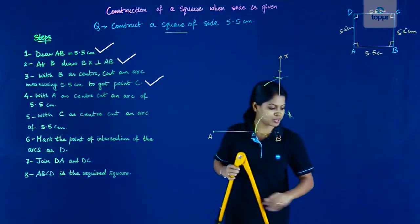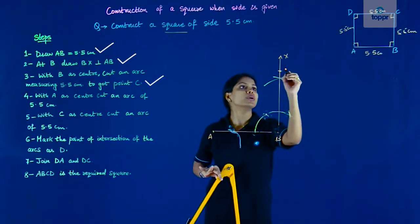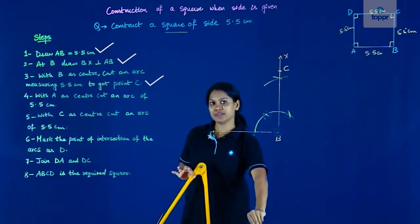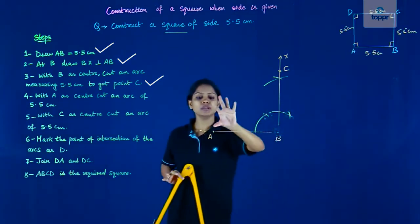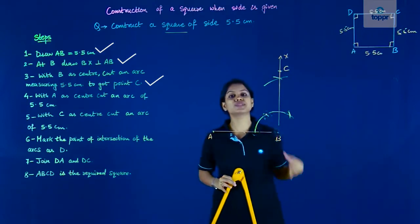Now this point here is, I'm not disturbing. I'll be needing 5.5 again. So this point here is C. Now why do I need 5.5 again is to find D. All we need to do is cut an arc of 5.5 measure from A and do the same thing from C.